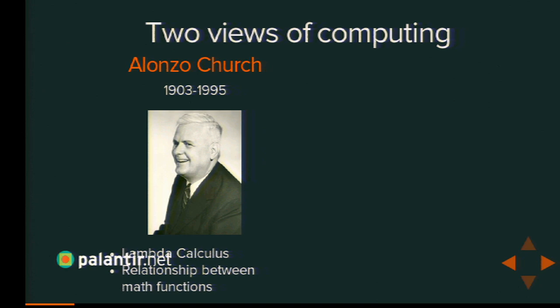One was a paper published by Alonzo Church describing something he called lambda calculus — calculus because he's a mathematician and mathematicians like to call things calculus because it sounds cool, and lambda because he got really tired of writing the word 'function' out in longhand. So as any good scientist, he started using Greek letters instead. Lambda is an alternate word for function — that's pretty much all you need to think about. Fundamentally, he was describing computation as a relationship between mathematical functions. In this world view, everything is a mathematical function.